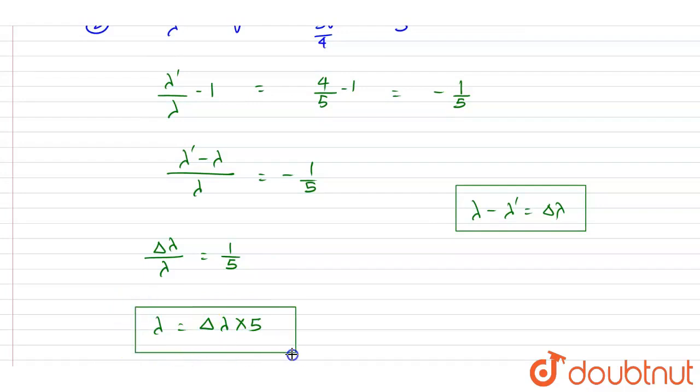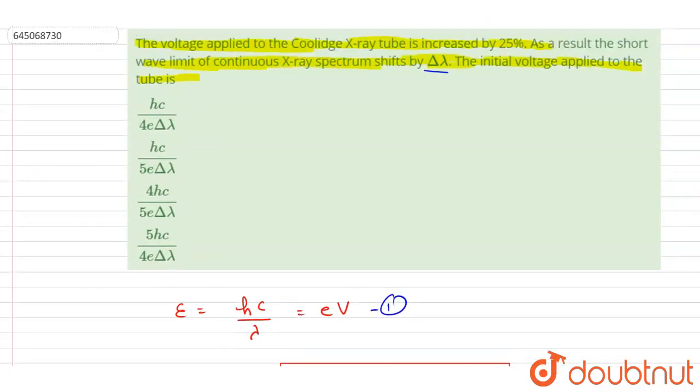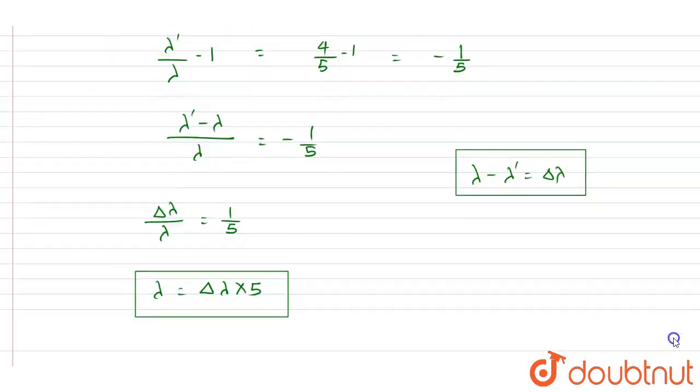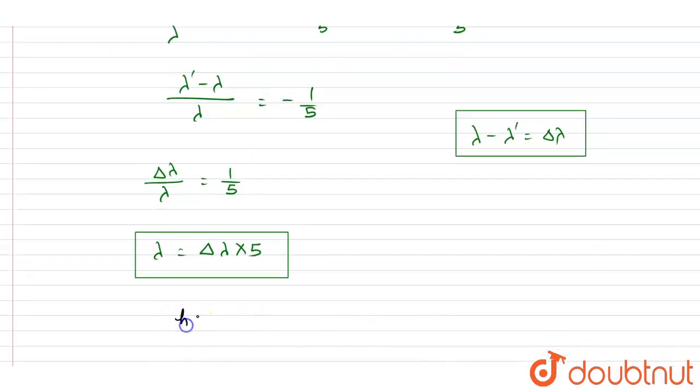Now if you see here, we want the initial potential applied in the tube. So if you see the relation between initial potential applied and the wavelength, it is this. So by using this equation, we can write down hc by lambda is equals to eV.